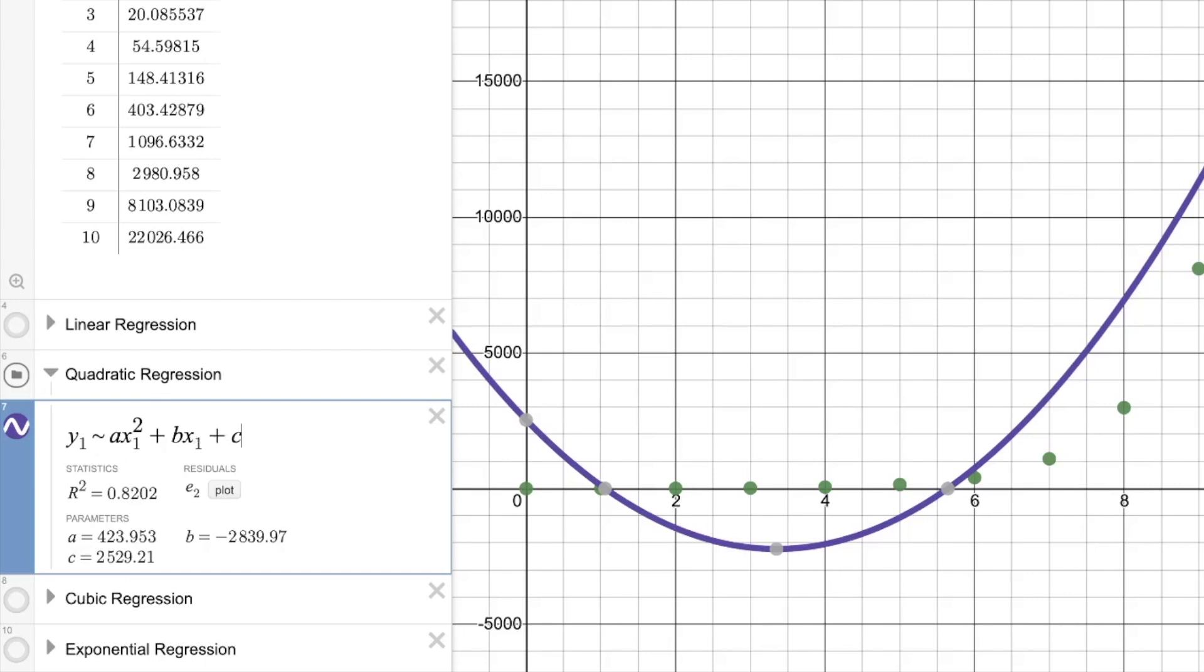we have it in a standard quadratic format to do this regression. So it will automatically find the quadratic curve of best fit, and it tells us our r squared value is now 0.8202.